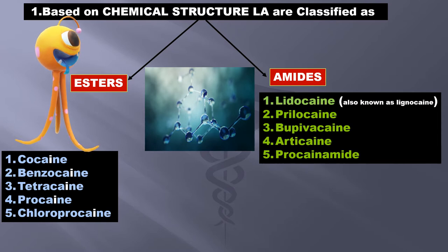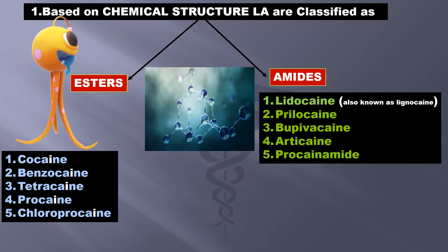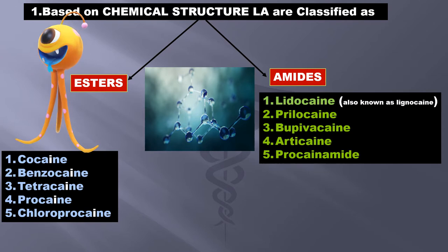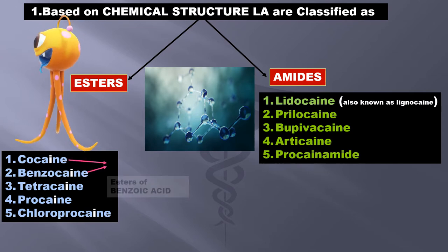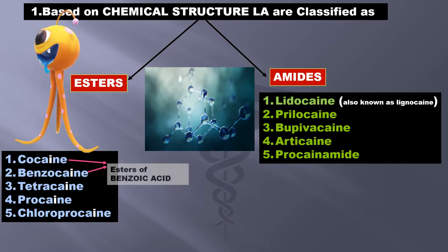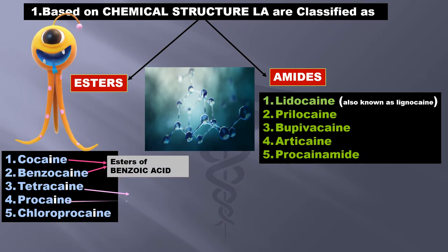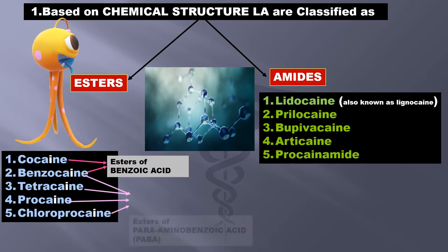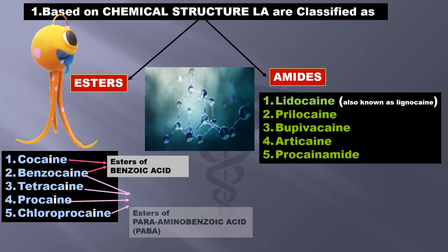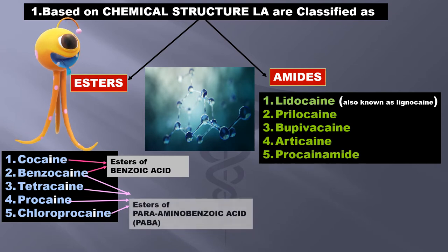A very easy trick to differentiate is that esters have only one 'i'. Cocaine and benzocaine are esters of benzoic acid. Tetracaine, procaine, chloroprocaine, and also benzocaine are esters of para-aminobenzoic acid.